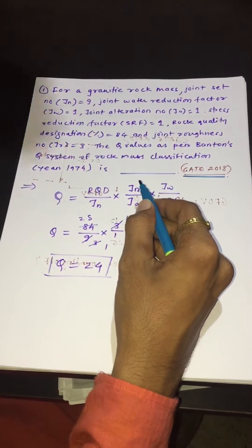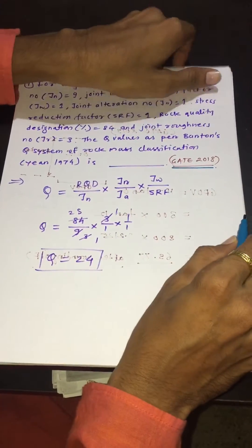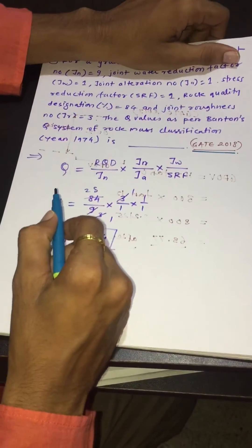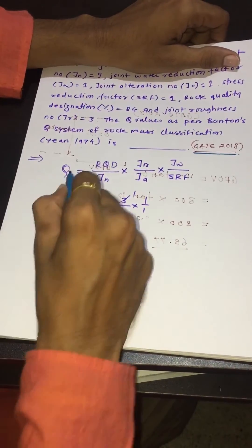This question is from GATE 2018. The formula for calculation of Q value as per Barton Q system of year 1974 is given.